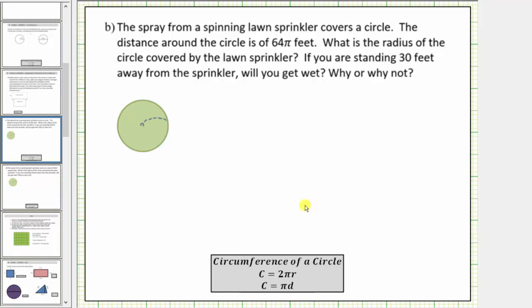Now we will solve an application problem involving the circumference of a circle. The spray from a spinning lawn sprinkler covers a circle. The distance around the circle is sixty-four pi feet. So this is a sprinkler and this is the circle.